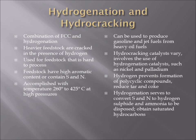This method could be used to produce gasoline and jet fuels with heavy oil fuels. The catalyst used in hydrocracking can vary, but typically they involve the use of hydrogenation catalysts, such as nickel and palladium. Hydrogenation refers to the adding of hydrogen with the catalyst under high pressures.